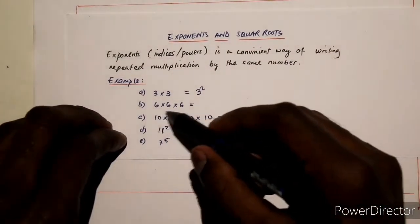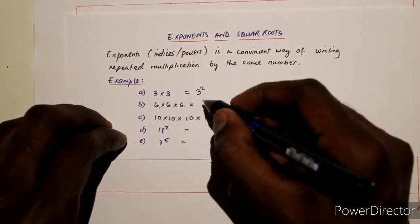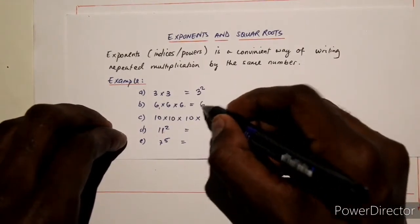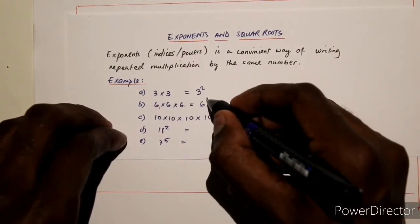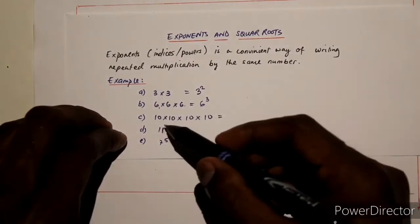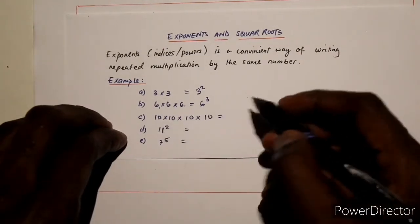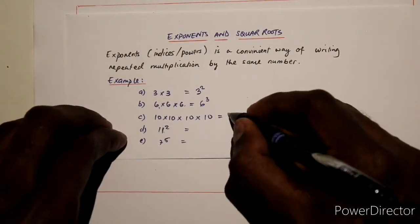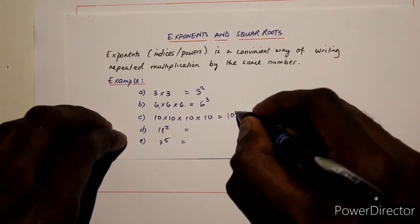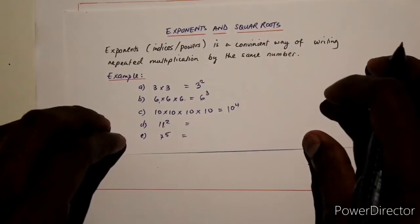If we are multiplying 6 three times, then 3 is our power — the base is 6, power of 3. If we are multiplying 10 four times, then it's 10 to the power of 4.